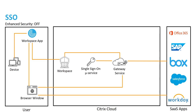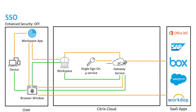What happens if I don't have Workspace app on my endpoint device? I'm going to use a browser and access Workspace web. The overall user experience is going to be identical whether I'm using Workspace web within my local browser or Workspace app. I'm still going to be contacting the Workspace service running in Citrix Cloud, still going to get a list of my SaaS and web-based applications, and it's still going to single sign me on to that SaaS application.